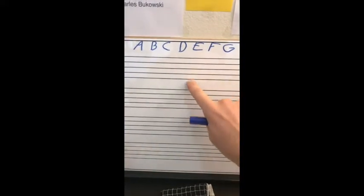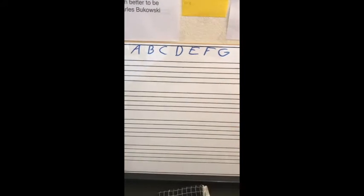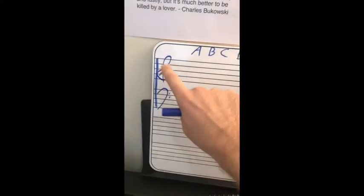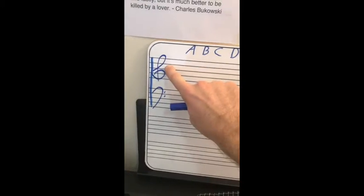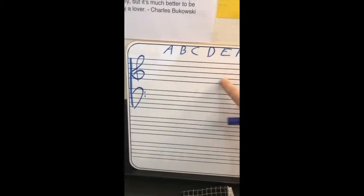Okay, here we go. We have five lines and four spaces, collectively called a staff. Over here on the left, we have a symbol called a clef. This is a treble clef. Guitarists, you will only ever have to read this.